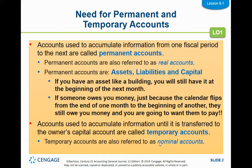Then we have some accounts that are temporary accounts that we are going to close out so that at the beginning of the next fiscal period they start at zero. The reason we do that is because of GAAP rules — matching expenses with revenue. We want to match the revenue with the expense, what it costs us to make that revenue. Whenever you start a new fiscal period, you have to clear those accounts out and make them zero.